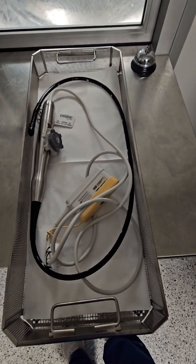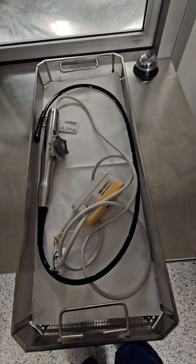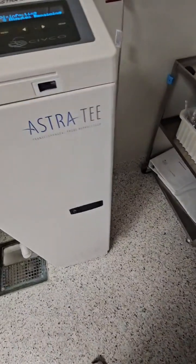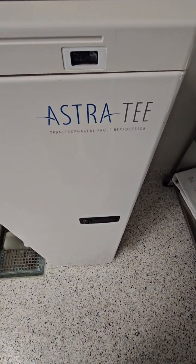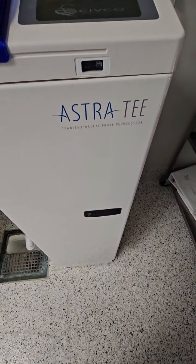The next step is high-level disinfection. Because we can't sterilize this item according to the IFU, high-level disinfection is the minimum process that we're doing, and we're doing this automated in the ASTRA TE unit.